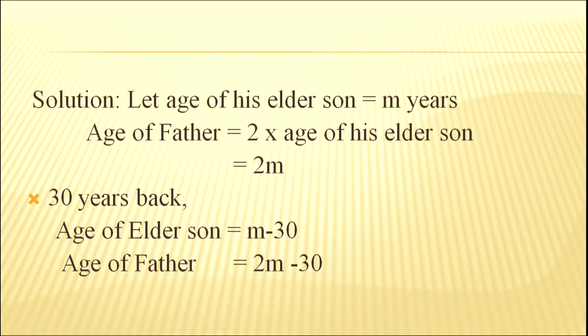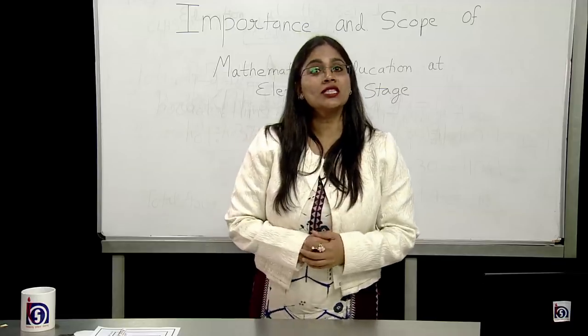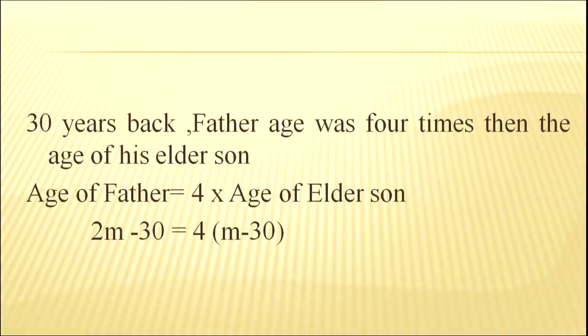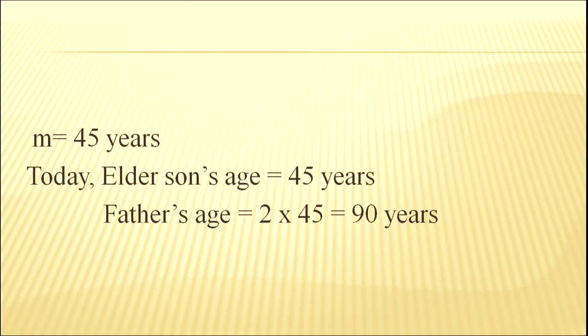Here is the solution. Suppose the age of the elder son is m years. According to the equation, the age of the father is 2m. Thirty years back, age of elder son equals m - 30 and age of father 2m - 30. According to the situation, thirty years back, father's age was four times the age of his elder son. So age of father = 4 × age of elder son. 2m - 30 = 4(m - 30). When we solve the equation, m would be forty-five years. Elder son's age equals forty-five and father's age is 2m, that makes ninety years.